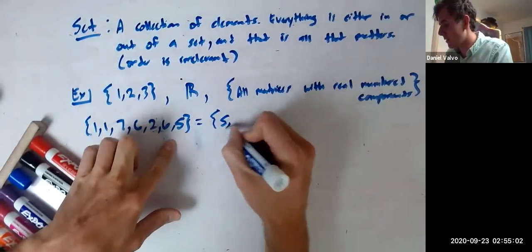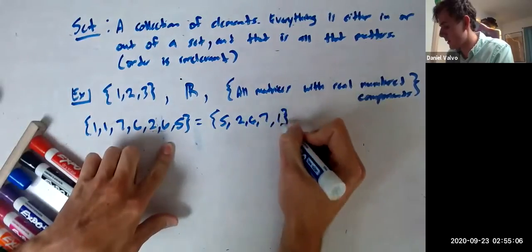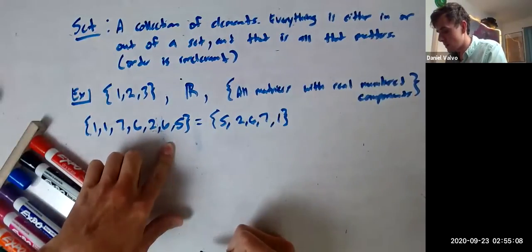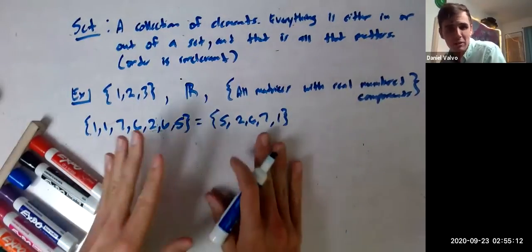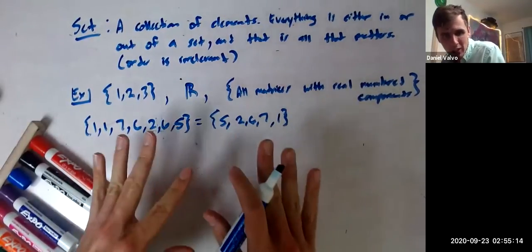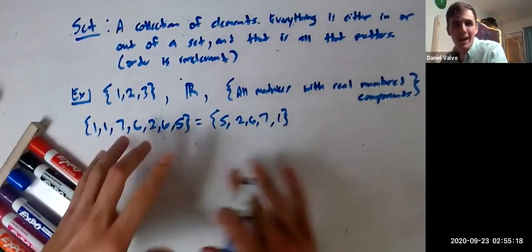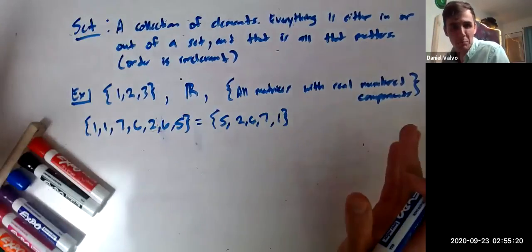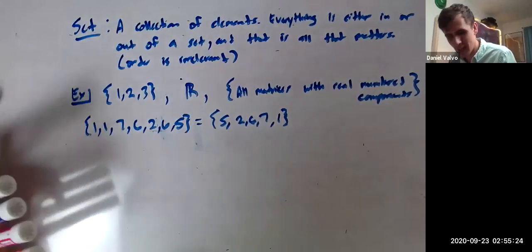So this is the same as {5, 2, 6, 7, 1}. Right? It doesn't matter. These sets are kind of describing the same thing, just the collection where these particular elements are in it. I just took the entire world of possible things and picked these out. That's a set. Any questions?